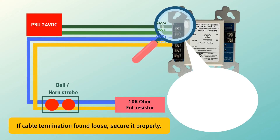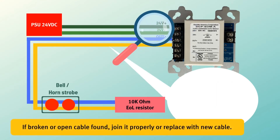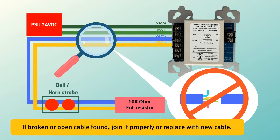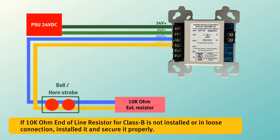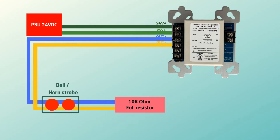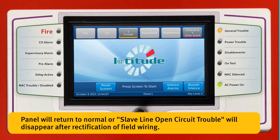If a cable termination is found loose, secure it properly. If a broken or open cable is found, join it properly or replace it with a new cable. If the 10k ohm end of line resistor for Class B is not installed or has a loose connection, install it and secure it properly. The panel will return to normal and the slave line open circuit trouble will disappear after rectification of the field wiring.